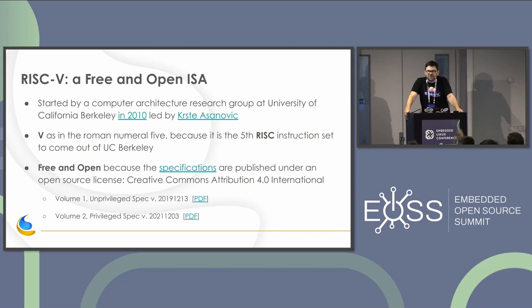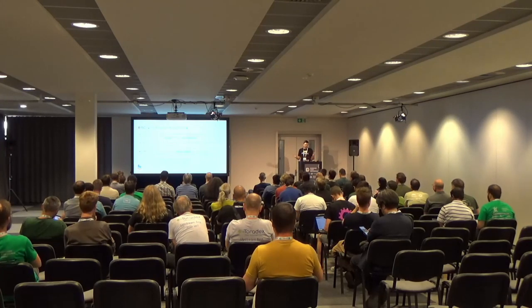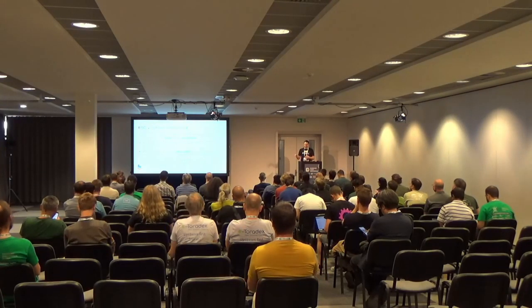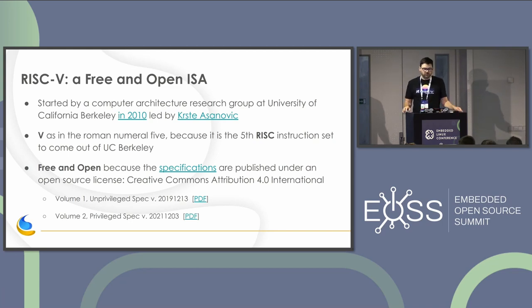So, show of hands — who's heard of RISC-V? I'm guessing it's probably most people. For those who haven't heard of RISC-V before, it's a free and open instruction set, or ISA. It started back in 2010 at Berkeley, where researchers doing work on accelerators needed an instruction set to base their designs on, and they decided to create a new one. The V is a Roman numeral for five — most people say RISC-V, but RISC-Five works too.